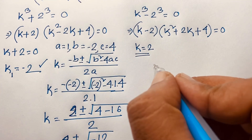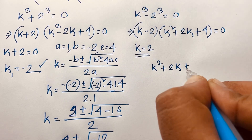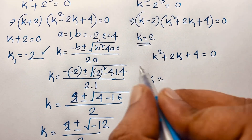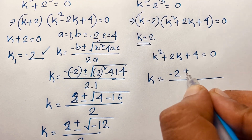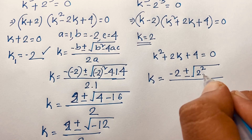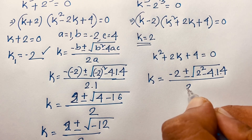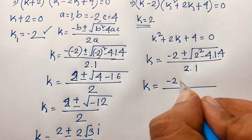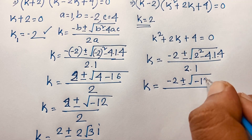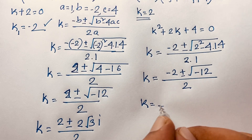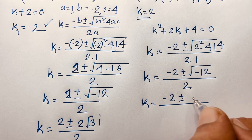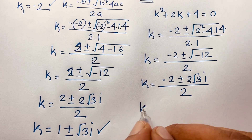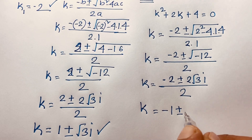For the second quadratic k squared plus 2k plus 4 equals 0, using the quadratic formula again: k equals minus 2 plus or minus square root of 4 minus 16 over 2, giving minus 2 plus or minus 2 times square root 3i over 2, so k equals minus 1 plus or minus square root 3i.